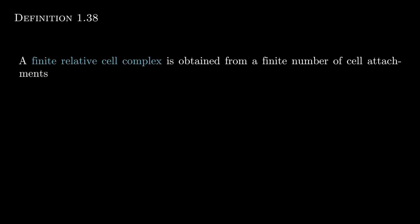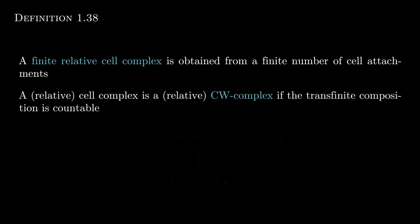Now a finite relative cell complex, as you would imagine, is obtained from a finite number of cell attachments. And a CW complex is one in which the transfinite composition is countable. So you might recall that CW complexes have very nice properties. I think we mentioned like Whitehead's theorem, CW approximation. So it turns out that we don't need the composition to be finite. We can actually work with it if it's a countable composition.